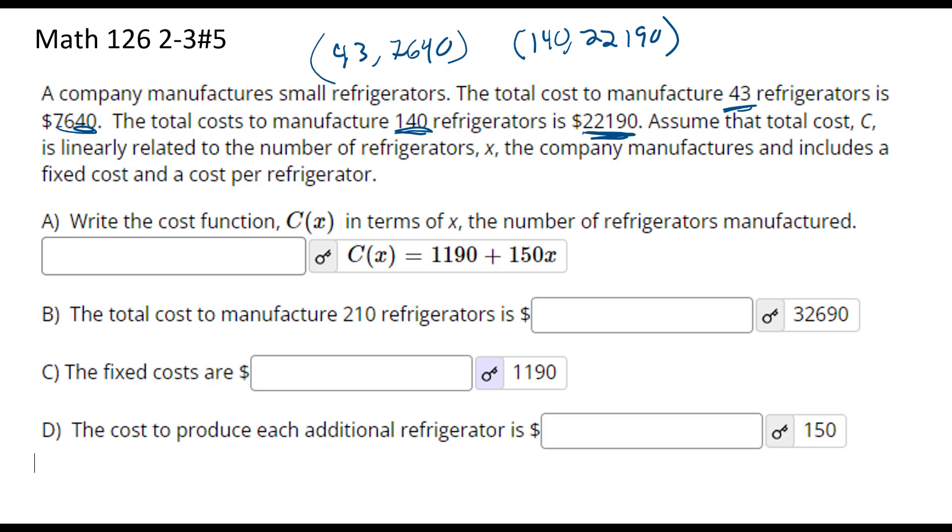Assume that the total cost C is linearly related. So the two points, these are two points, they make a line. The number of refrigerators is X. We're going to find C of X. The company's cost includes a fixed cost and a cost per refrigerator.